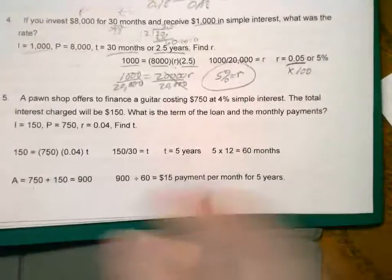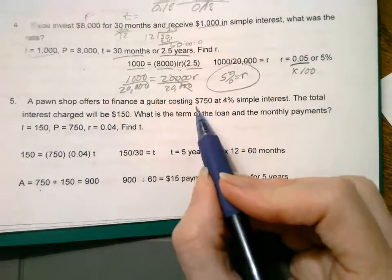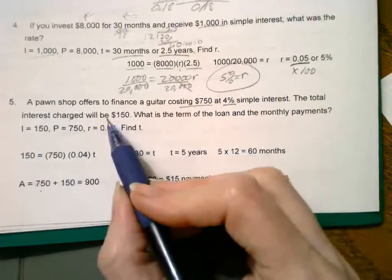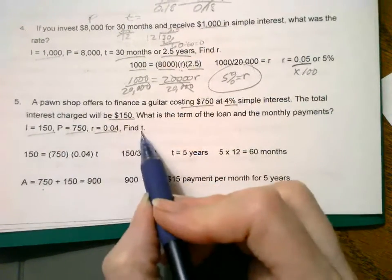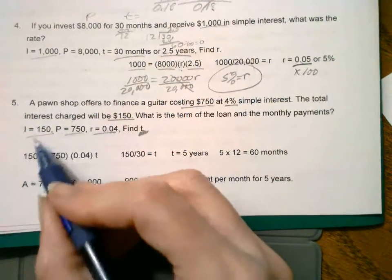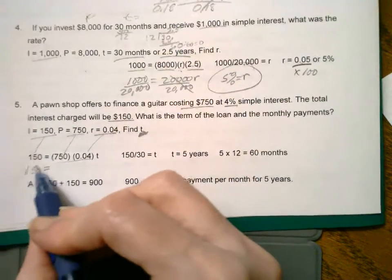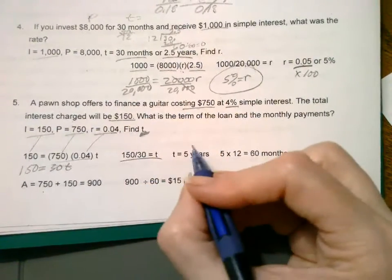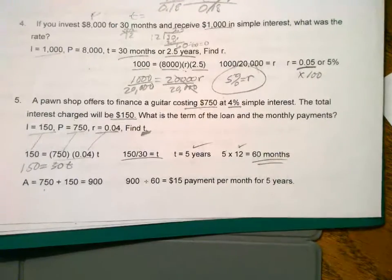Number five. Pawn shop. So I gave you one example of each thing that's missing. So guitar costing this at simple interest. Interest will be that. So that's your I. There's your principal. There's your rate. What's the term and what's the monthly payments. So substitute in the I, the P, the R, multiply first. You're going to get 30. Divide both sides by 30. You're going to get five years. And at five years times 12 will give you 60 months to pay it off.